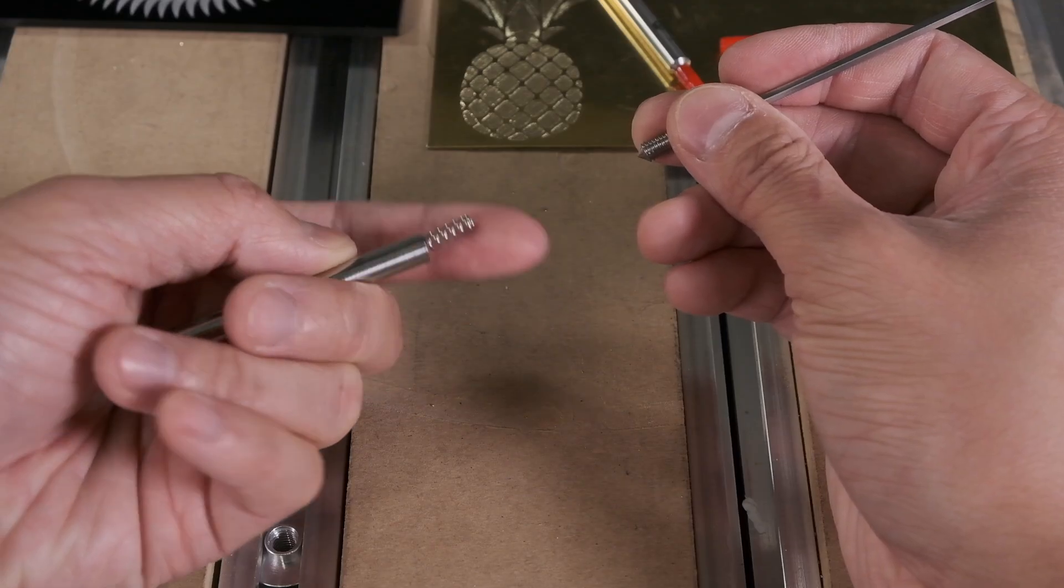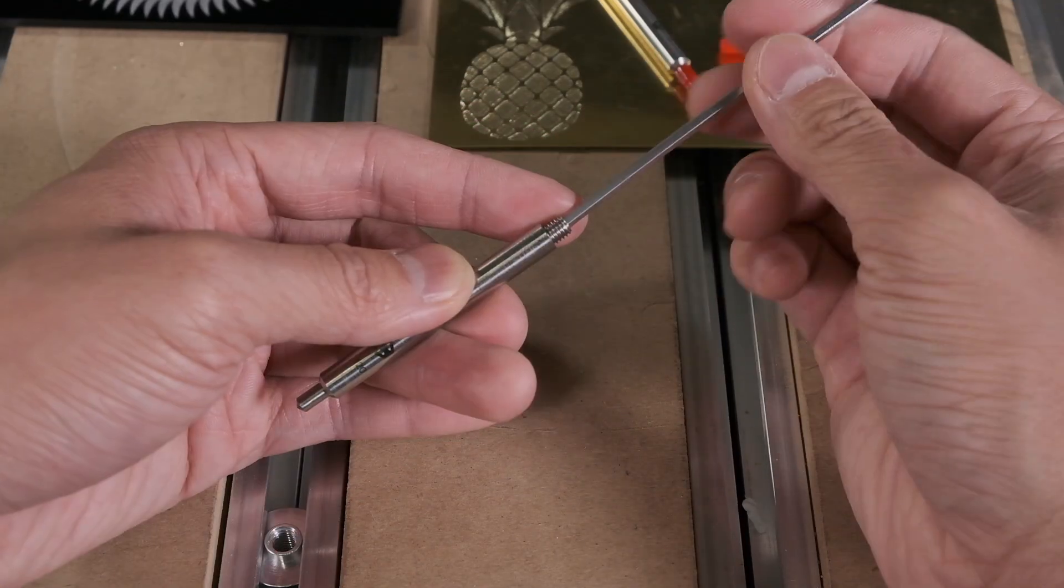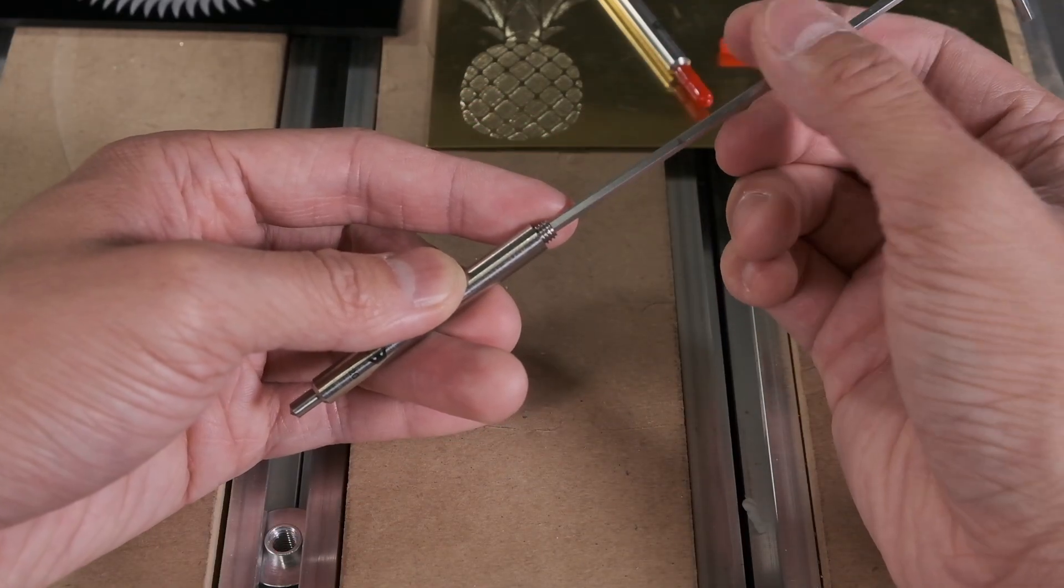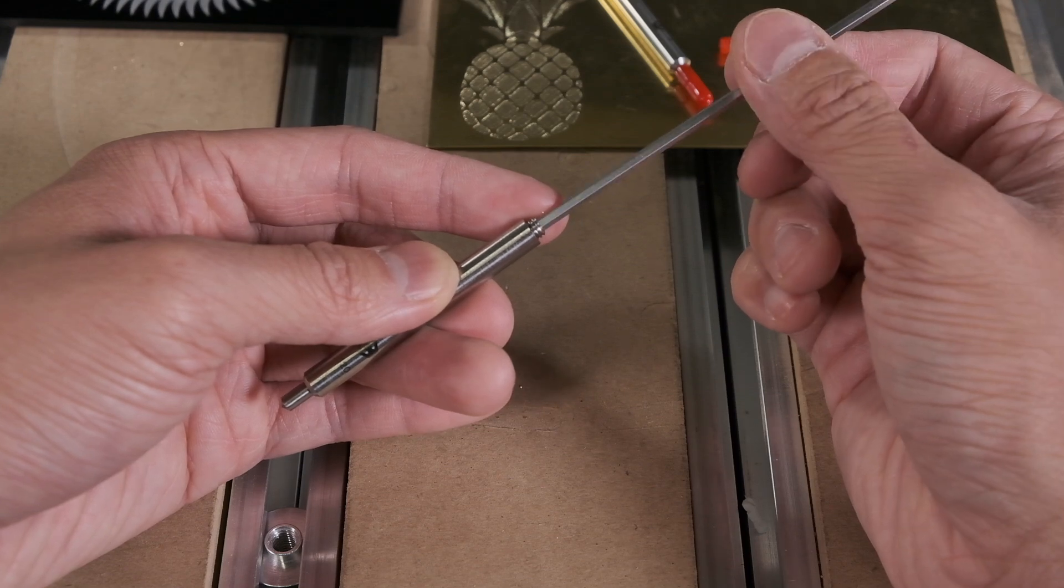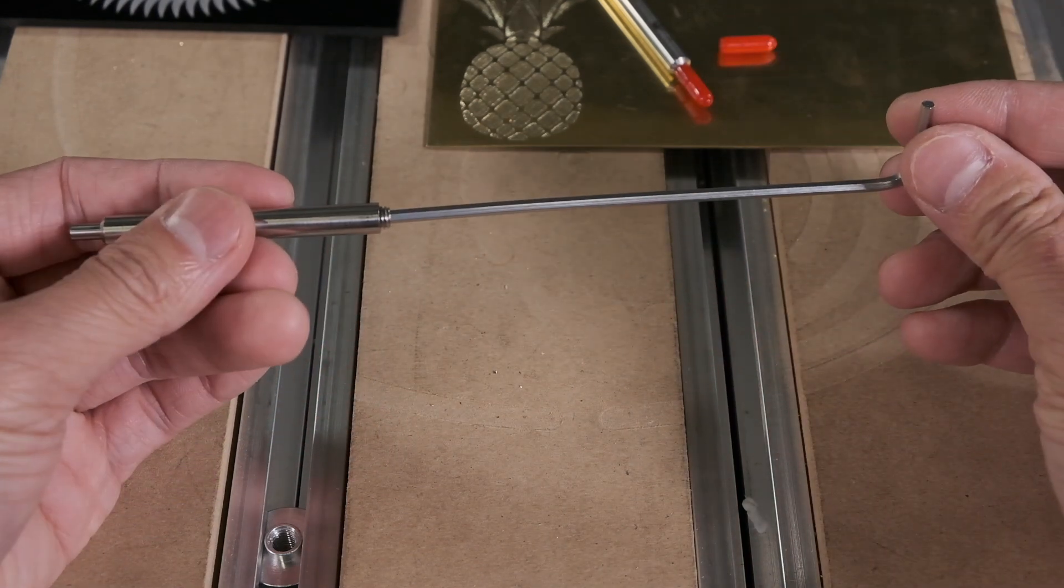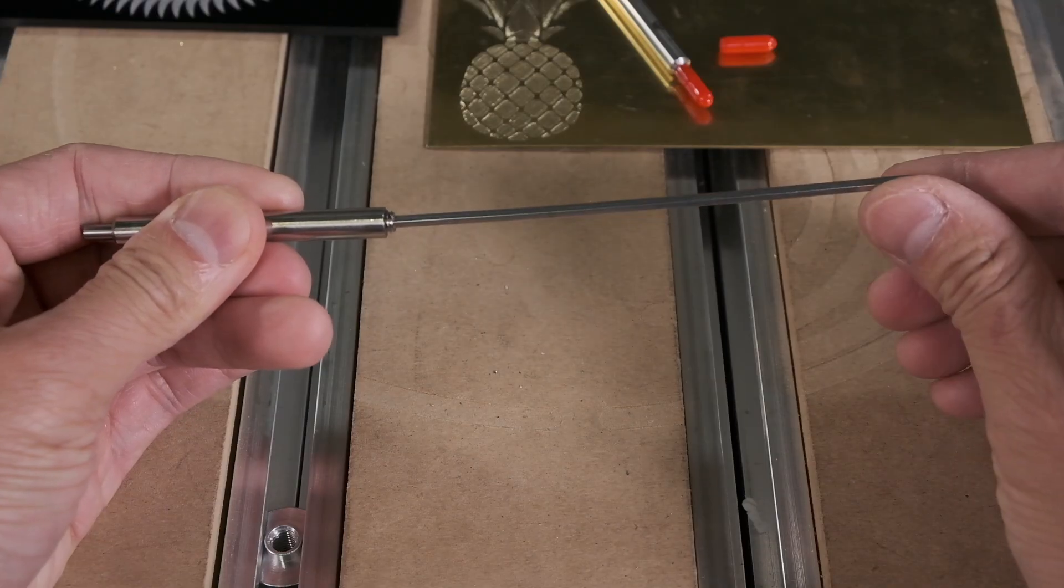You can adjust the pre-compression of the spring by turning the set screw. To start, we recommend turning the set screw until it just contacts the spring, and then adding between a quarter to half a turn. Tighten the set screw down further if you need greater force.